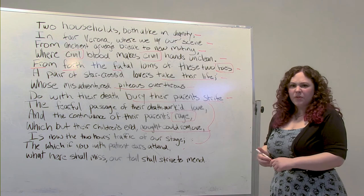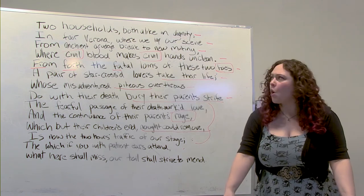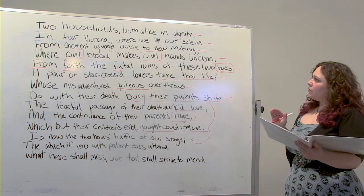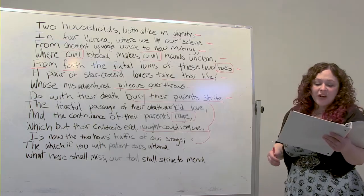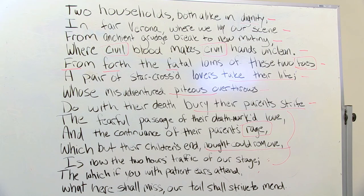So now we've broken everything down. Let's try reading it one more time. Two households, both alike in dignity, in fair Verona where we lay our scene. From ancient grudge break to new mutiny, where civil blood makes civil hands unclean. From forth the fatal loins of these two foes, a pair of star-crossed lovers take their life. Whose misadventured, piteous overthrows do with their death bury their parents' strife. The fearful passage of their death-marked love, and the continuance of their parents' rage, which but their children's end not could remove, is now the two hours' traffic of our stage. The which, if you with patient ears attend, what here shall miss, our toil shall strive to mend.